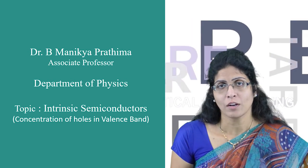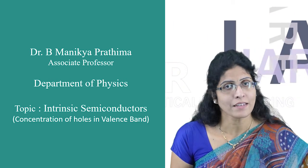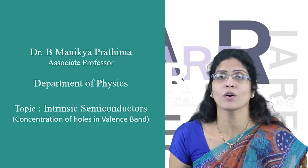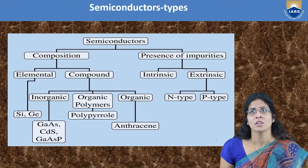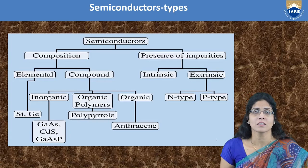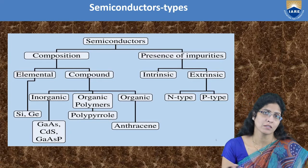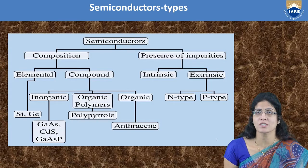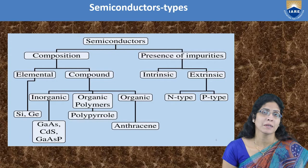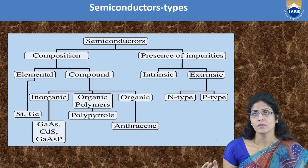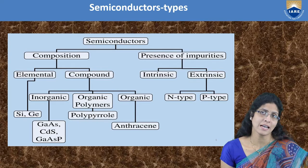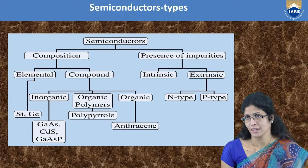I would like to ask you to settle with a pen and paper so that you can follow along with me in the calculations. This is a revision slide where you will see semiconductors classified into two types based on composition as elemental and compound, and depending on the presence of impurity classified as intrinsic and extrinsic semiconductors.